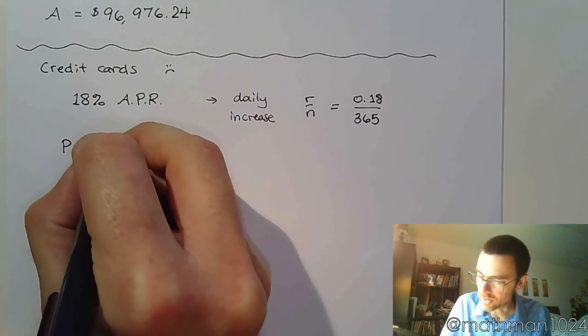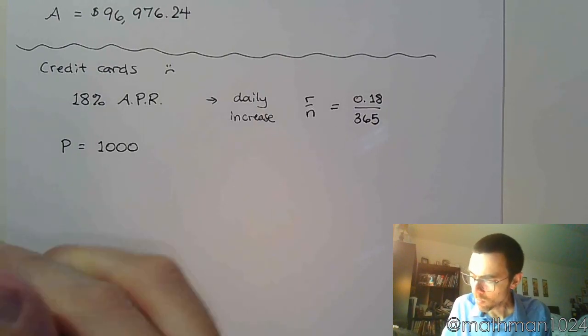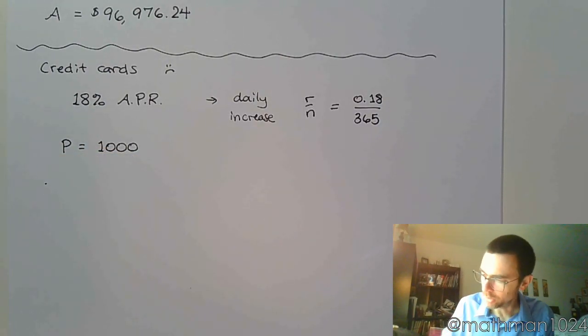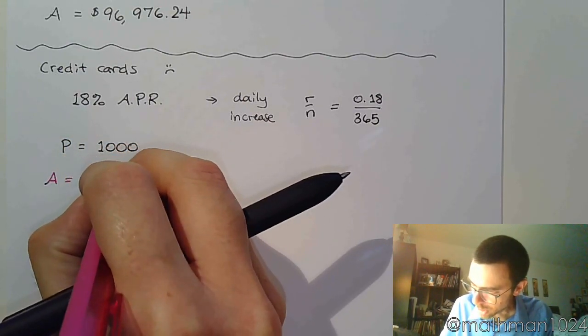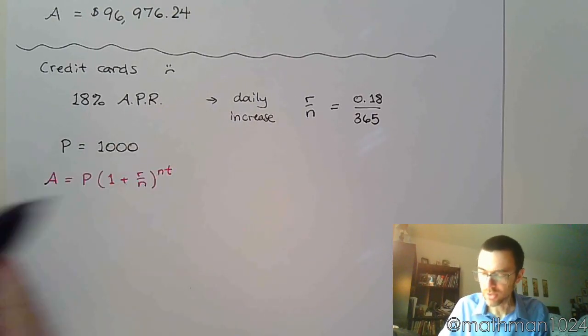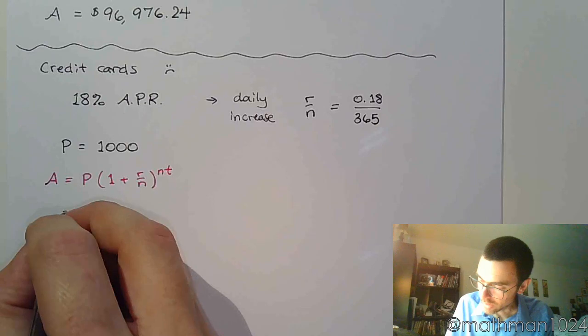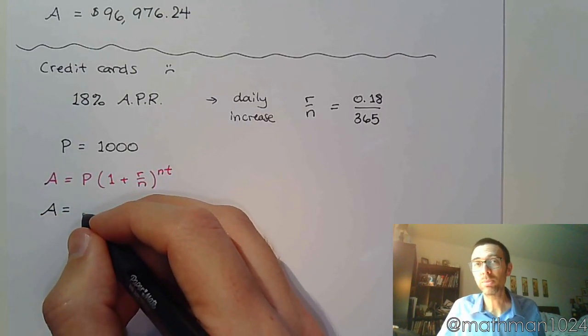If you have, let's say, a $1,000 unpaid credit card balance, let's see what that $1,000 is going to be at the end of one year. So let's use that formula: A equals P times 1 plus r over n to the nt.